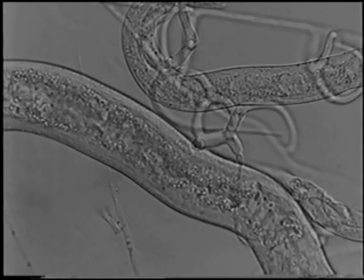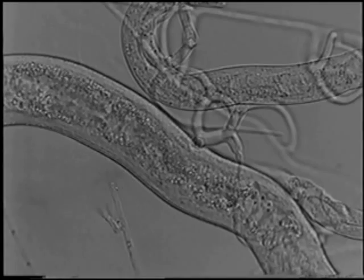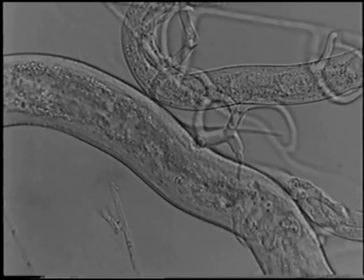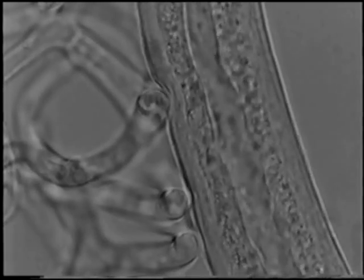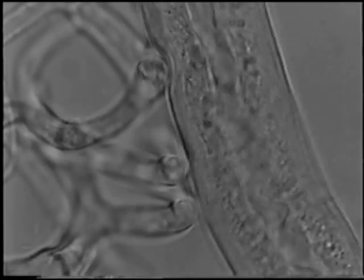At the infection site, an indentation of the nematode cuticle is seen where a penetration tube is being formed. The effective adhesive with its fibrillar structure causes the nematode to stick firmly to the trap.